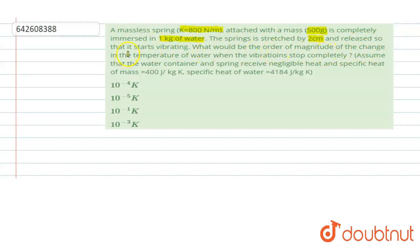The spring is stretched by 2 cm and released so that it starts vibrating. What would be the order of magnitude of change in temperature of the water when the vibrations stop completely? Assume that the water container and spring receive negligible heat, and specific capacity of the mass is 400 J/kg·K and specific heat capacity of water is 4184 J/kg·K.